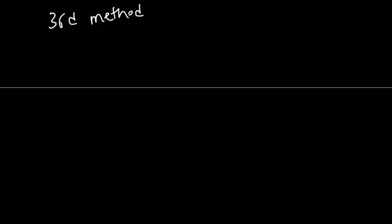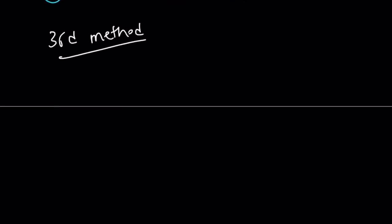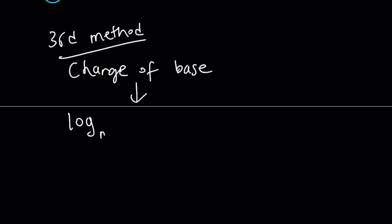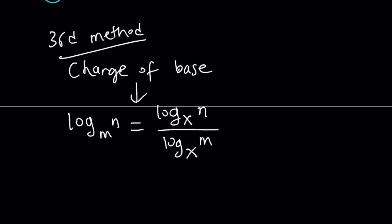Let's go ahead and take a look at the third method. My third method is going to use the formula for change of base. Change of base works like this and it works with any base. Suppose I have log n with base m — I can write this in a different base, say base x. Then n goes upstairs and m goes downstairs. And obviously we can use any base, so I can also use ln: this is going to be ln n over ln m.